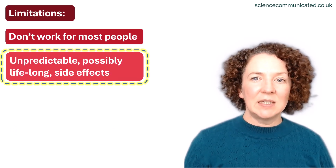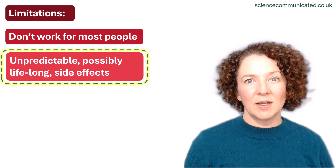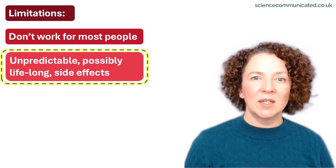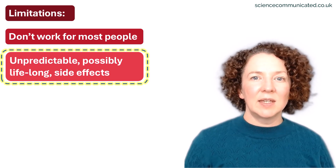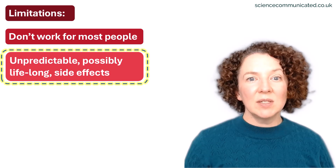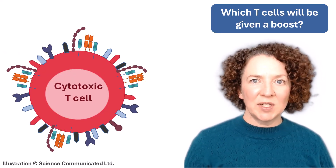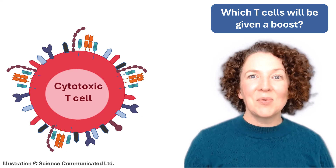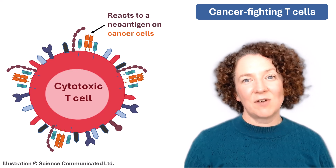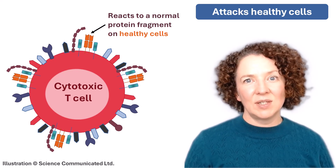The second limitation is side effects, which are unpredictable and sometimes lifelong. These happen when the wrong T cells are activated by the checkpoint inhibitor. And instead of recognising cancer cells, they start reacting to healthy cells. This can lead to an autoimmune disease or chronic inflammation. The truth is, when you give someone a checkpoint inhibitor, you don't know what T cells are going to be boosted by your treatment. You hope it's the cancer-fighting T cells, but it could be T cells that attack healthy tissues instead.